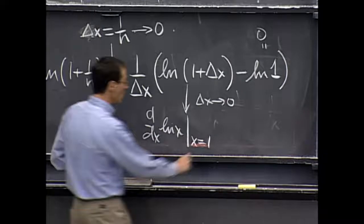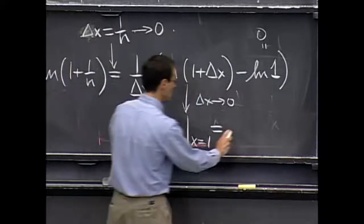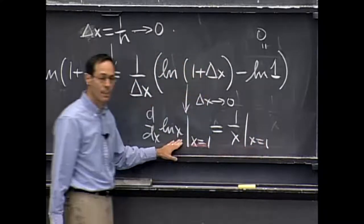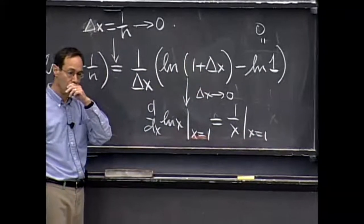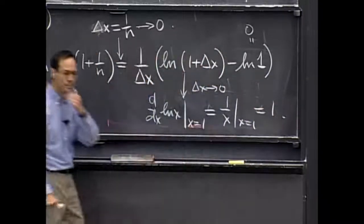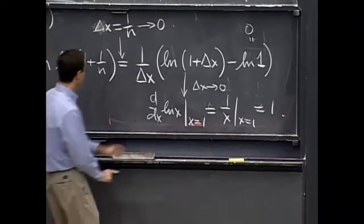But we know what the derivative of the log function is. The derivative of the log function is 1 over x. So this limit is 1. OK, so we got it. We got the limit.